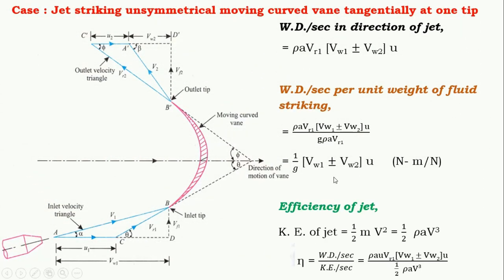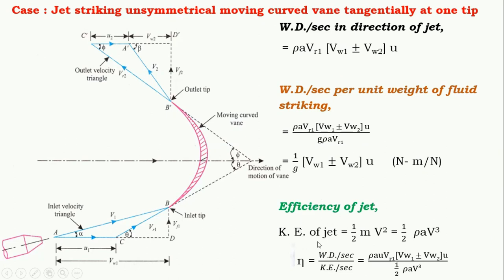To calculate the efficiency of the jet we must know the kinetic energy. The kinetic energy of the jet is equal to one half m-dot v squared, which simplifies to one half rho A v cubed. The efficiency is calculated as output upon input, where output is the work done per second and input is the kinetic energy of the jet per second. So efficiency is equal to rho A u Vr1 into bracket Vw1 plus Vw2 into u, divided by one half rho A v cubed.